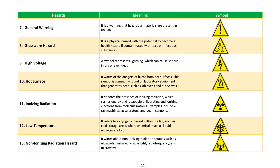Ionizing radiation: denotes the presence of ionizing radiation, which carries energy and is capable of liberating and ionizing electrons from molecules or atoms; examples include X-ray machines, accelerators, and beam cannons. Low temperature: refers to a cryogenic hazard within the lab, such as cold storage areas where chemicals such as liquid nitrogen are kept. Non-ionizing radiation hazard: warns about non-ionizing radiation sources such as ultraviolet, infrared, visible light, radio frequency, and microwave.